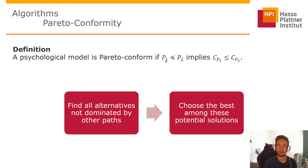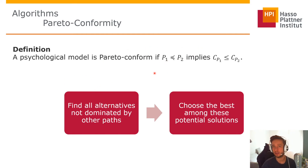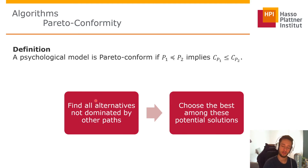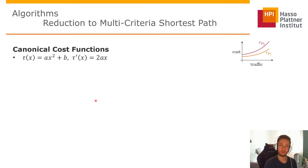We can then brute force this set of non-dominated paths and choose the cheapest path, because for dominated paths there is always another path dominating it with lower costs. We find all non-dominated paths via a multi-criteria shortest path problem.